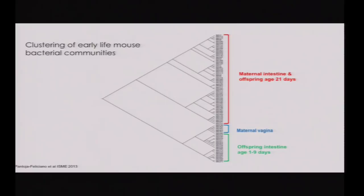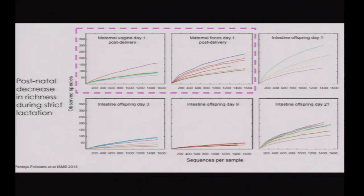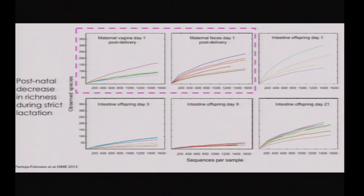This tells us that the first microbiota in babies is vaginal. In the rarefaction curves we see a decrease in richness — OTUs or species — and all babies converge to decrease diversity during strict lactation, which in these mice lasts 14 days. After 14 days they start eating solids, and by day 21 at weaning they recover their diversity.